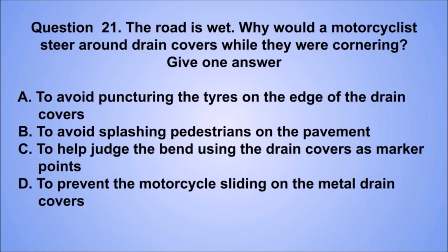Question 21. The road is wet. Why would a motorcyclist steer around drain covers while they were cornering? Give one answer. A: To avoid puncturing the tyres on the edge of the drain covers. B: To avoid splashing pedestrians on the pavement. C: To help judge the bend using the drain covers as marker points. D: To prevent the motorcycle sliding on the metal drain covers. The correct answer is D.